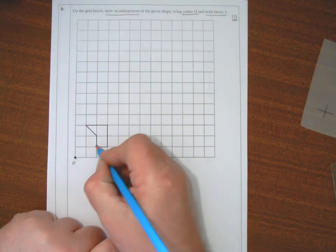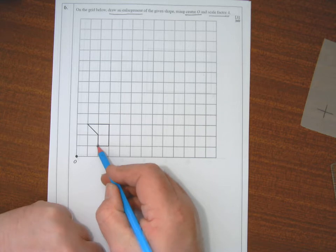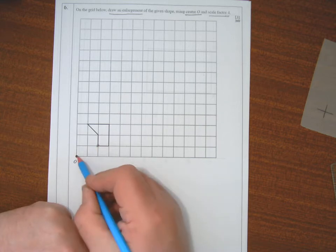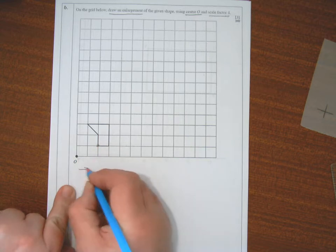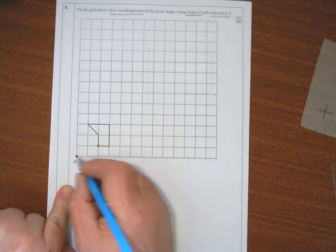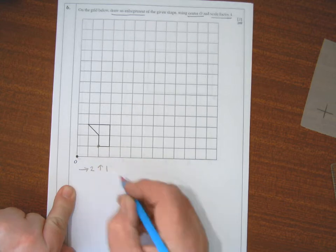If I take this point here, this is the point to start drawing my new shape. From the center to that point, I'm going across two and up one.